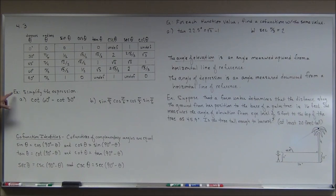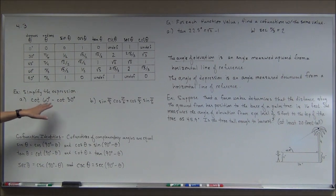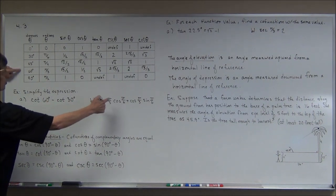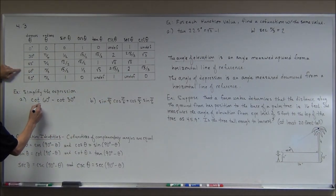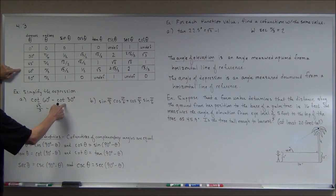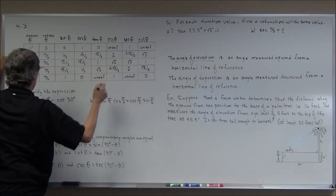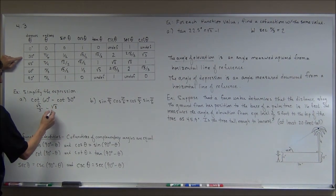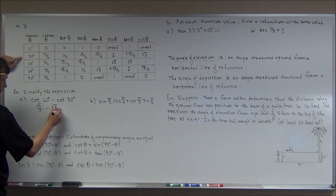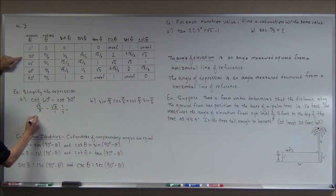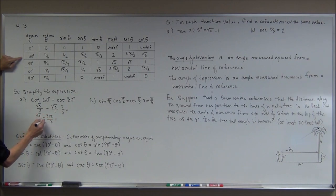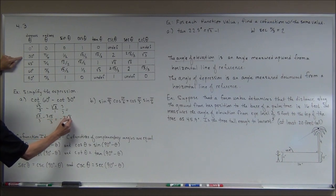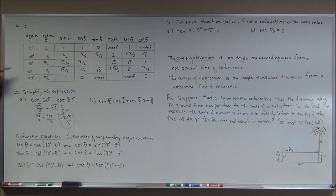Simplify the expression: cotangent of 60 degrees minus cotangent of 30 degrees. You don't subtract the angles — you find the values. Cotangent of 60° is √3/3, and cotangent of 30° is √3. To subtract these, get a common denominator: multiply top and bottom by 3 to get √3/3 minus 3√3/3, which gives negative 2√3/3. Give an exact value, not a calculator approximation.